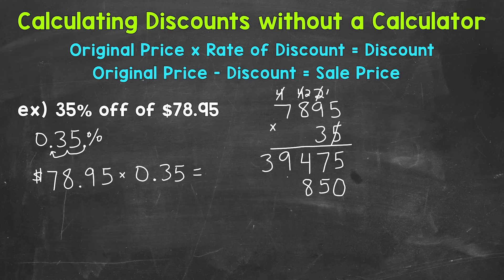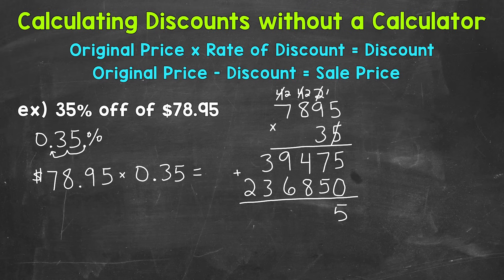3 times 9 is 27, plus 1 is 28. 3 times 8 is 24, plus 2 is 26. And 3 times 7 is 21, plus 2 is 23. Now we add: 5 plus 0 is 5. 7 plus 5 is 12. 1 plus 4 is 5, plus 8 is 13. 1 plus 9 is 10, plus 6 is 16. 1 plus 3 is 4, plus 3 is 7. And then we have a 2.